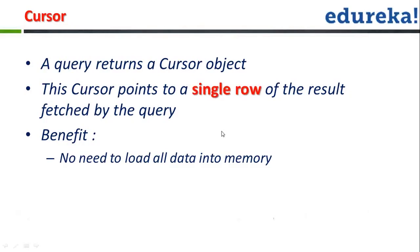You don't have to load all the data in memory. You only have to load the row that is pointed by the cursor object, and you can save a lot of processing by using this. You can save both RAM and processing. That was the cursor.